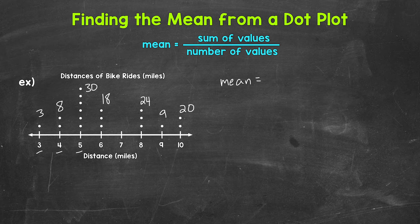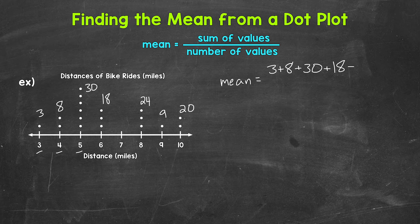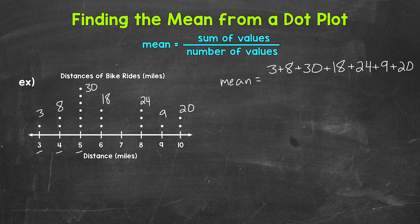So let's do 3 plus 8 plus 30 plus 18 plus 24 plus 9 plus 20. So that will give us the sum of all of our values, all of the distances.